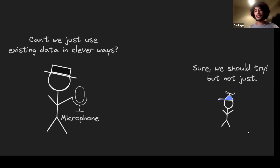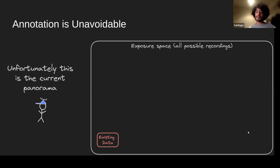The government official eventually said: can we just use existing data? And my reply: yes, that should be done — it's an important part of the project, but it's not the only thing we need to do. In many cases like biodiversity monitoring, all existing data, even unannotated, is such a tiny fraction of the entire exposure space. Consider all the species never recorded, all the situations never recorded — the current panorama is that we have a tiny fraction of what we'd need for passive acoustic monitoring.